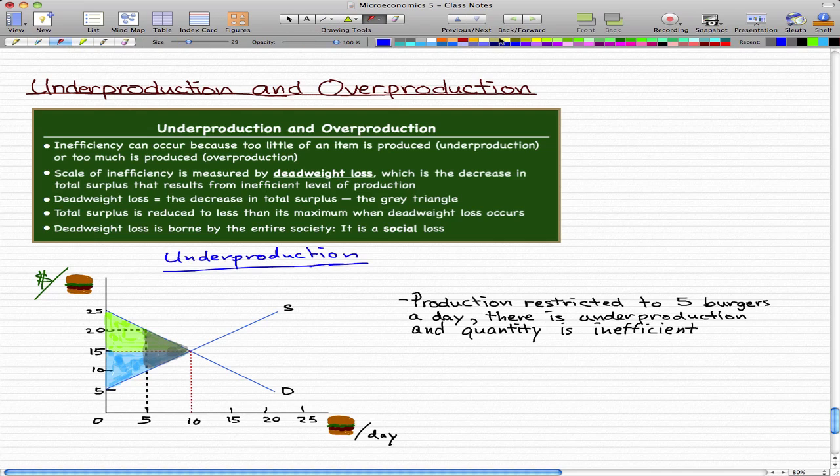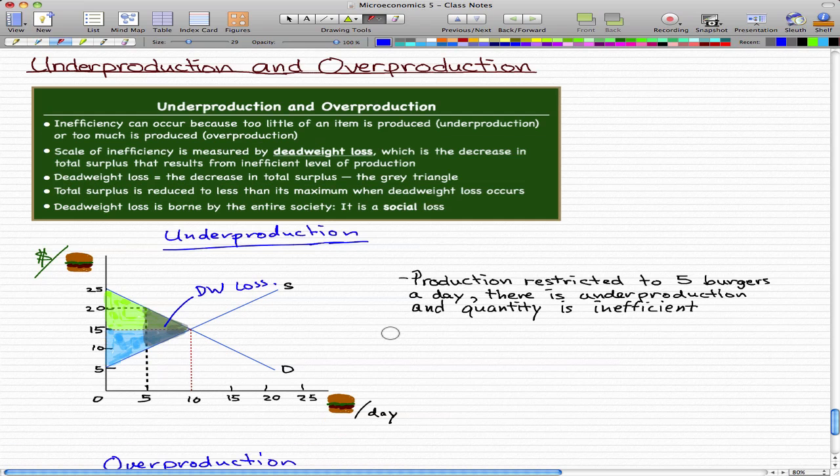So let's just label that a bit. Get my pen out, and we'll just label that, this is a deadweight loss. So that's as simple as it gets, it is a decrease in total surplus, and it is represented by the gray triangle, and this loss is a social loss.